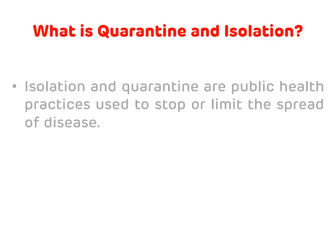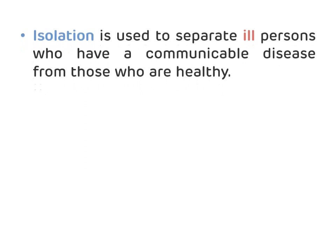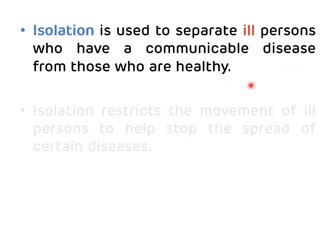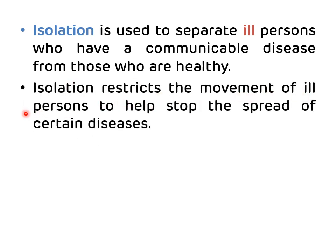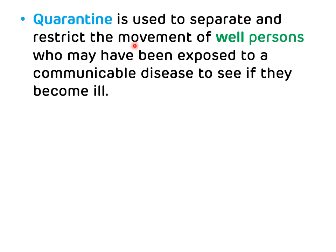So what is quarantine and isolation? Isolation and quarantine are both public health practices which are used to stop or limit the spread of disease. Isolation is basically used to separate ill persons who have a communicable disease from those who are healthy, and it restricts the movement of ill persons to help stop the spread of certain diseases. Quarantine is used to separate and restrict the movement of well persons who may have been exposed to a communicable disease to see if they become ill.